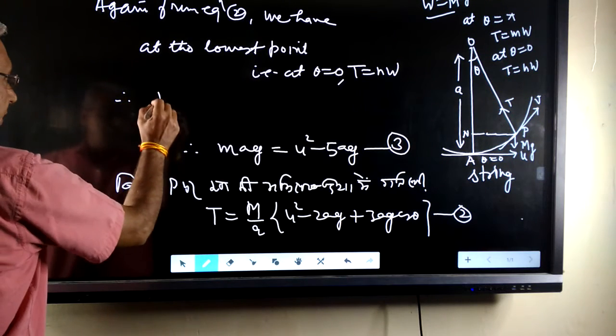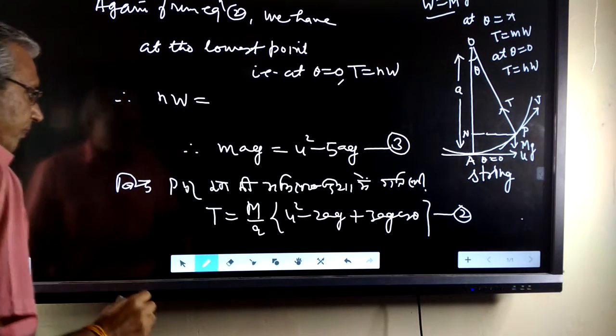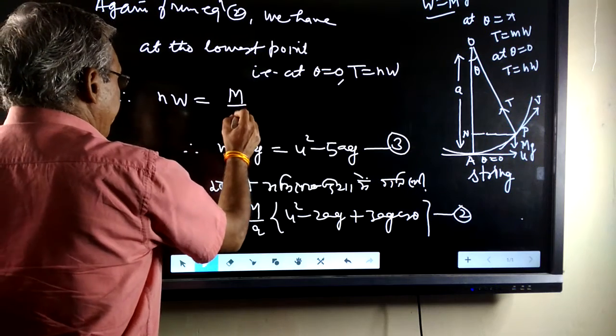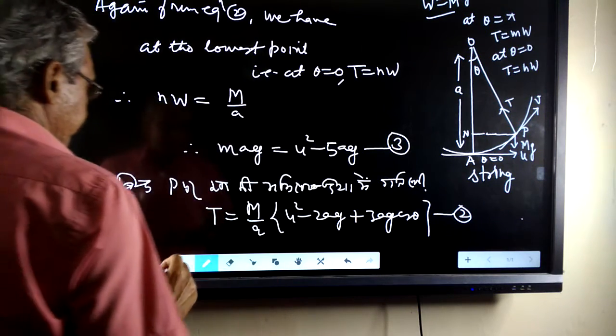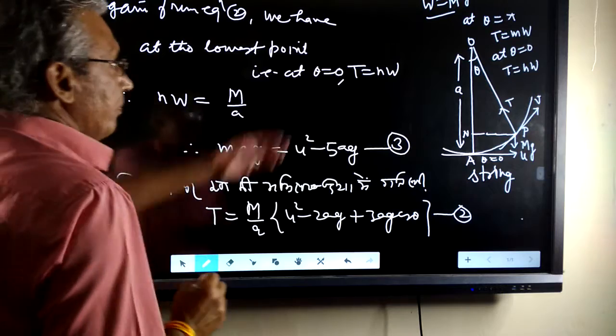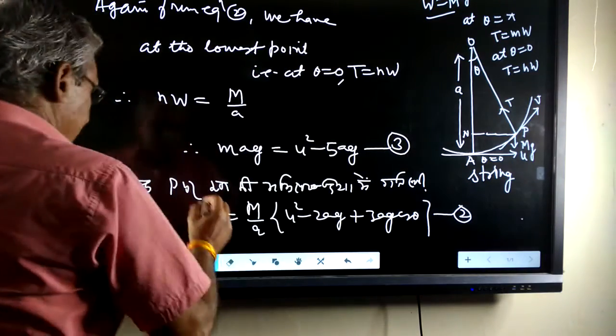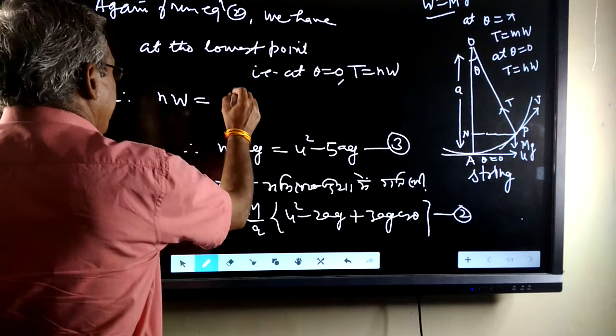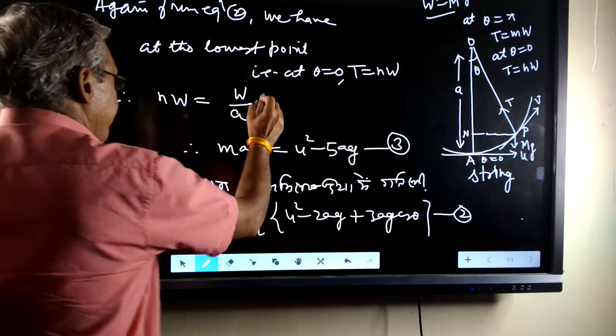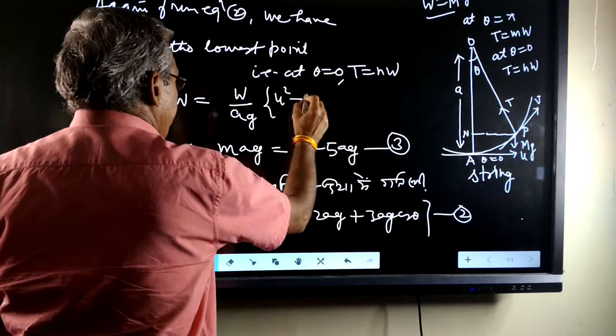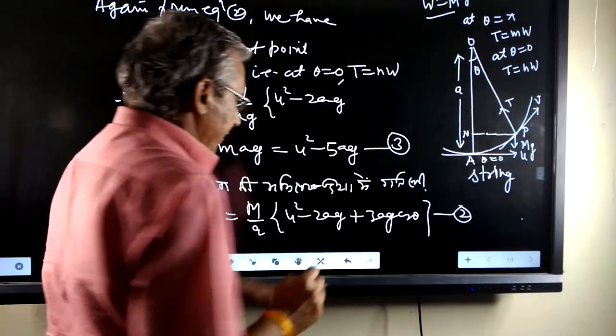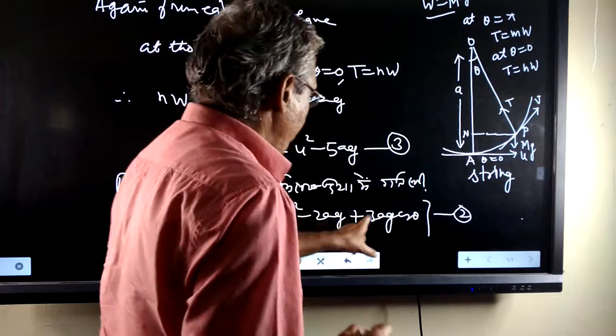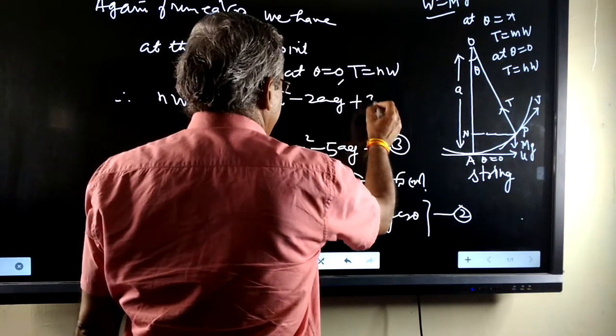Therefore, nw equals to m by a. What is the value of m? m is w by g, which is w by g. This is u square minus 2ag. Here, theta is 0. Therefore, this is plus 3ag.